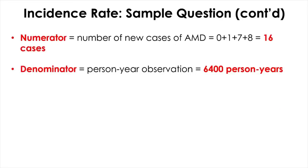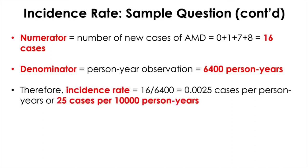The numerator we already calculated is the number of new cases of AMD, and we had 16 cases. The denominator is the person-year observation, and I just calculated 6,400 person-years. So it's 16 over 6,400 person-years, which is either 0.0025 cases per person-years, or I prefer this notation to the decimal notation. You want to make it a whole number: 25 cases per 10,000 person-years. Whichever you report, the incidence rate is fine, but personally, I prefer this latter one.